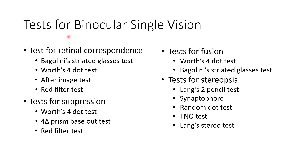Now let us discuss the tests for binocular single vision. Tests for retinal correspondence include Bagolini's striated glasses test, Worth's four dot test, after image test, and red filter test. Tests for suppression include Worth's four dot test, four diopter base-out prism test, and Bagolini's striated glasses test. Tests for stereopsis include Lang's two pencil test, Synaptophore, random dot test, TNO test, and Lang's stereo test.